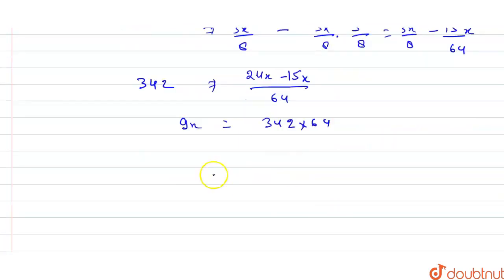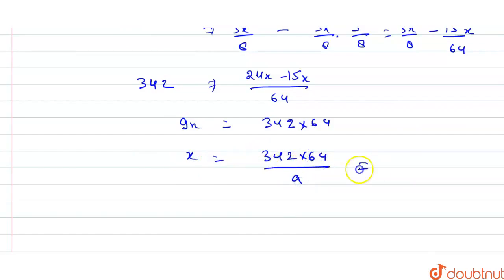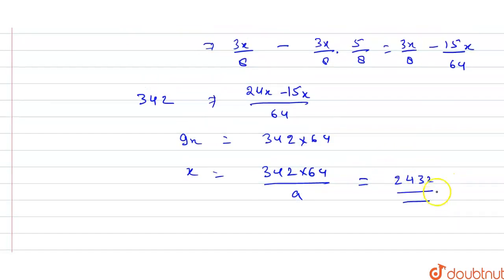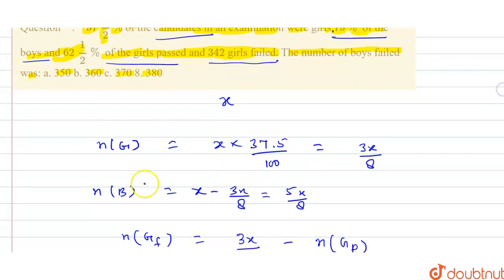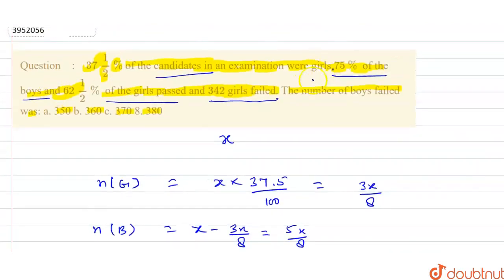So 9x equals 342 into 64, therefore x equals 342 into 64 upon 9, which gives x equals 2432. So the total number of candidates is 2432, and the number of boys is 5x by 8. Since 75% of boys passed, that means 25% failed.